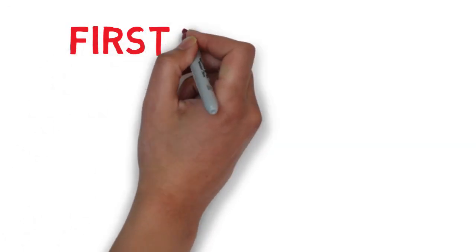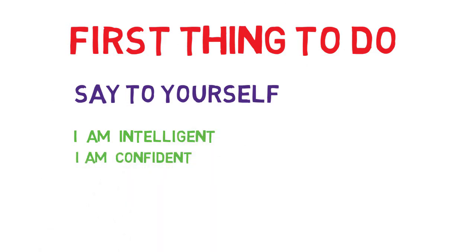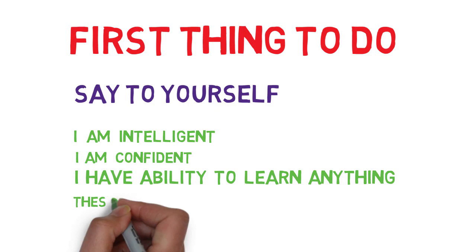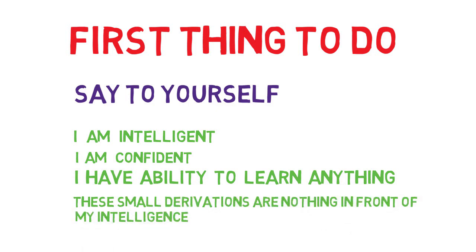The first thing you need to do right now is to say this to yourself: I am intelligent, I am confident, I have the ability to learn anything. These small derivations are nothing in front of my intelligence.